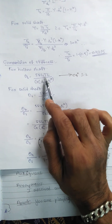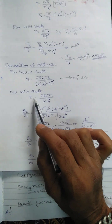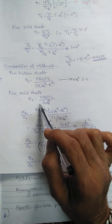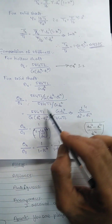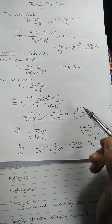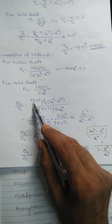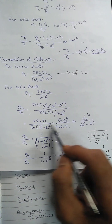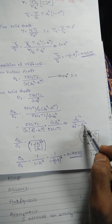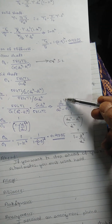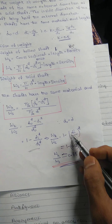Next, comparison of stiffness. Using equation 3.2, theta_h = 584*T*L / (G * (d_o^4 - d_i^4)) for the hollow shaft, and theta_s = 584*T*L / (G * d_o^4) for the solid shaft. Dividing theta_h by theta_s, the 584*T*L/G terms cancel, leaving d_o^4 / (d_o^4 - d_i^4).